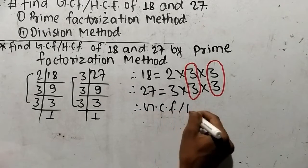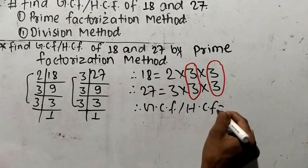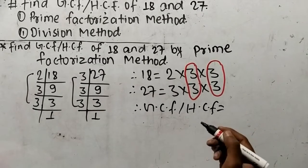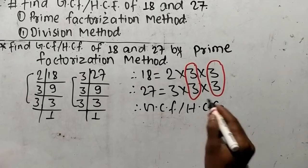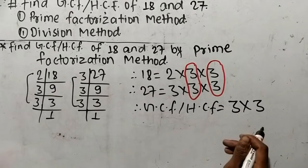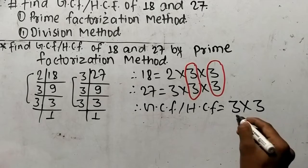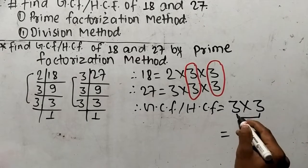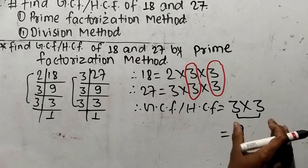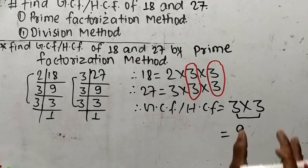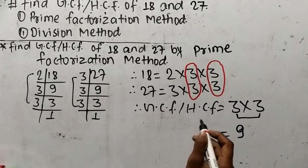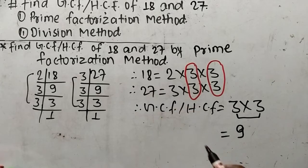As you know, we are finding out GCF or HCF, which is the product of all common factors only. The common factors are 3 and 3, so we find the product of these common factors: 3 times 3 equals 9. Therefore, 9 is the GCF or HCF of 18 and 27.